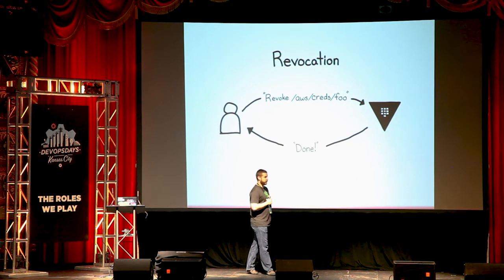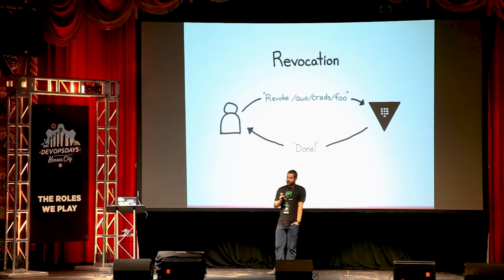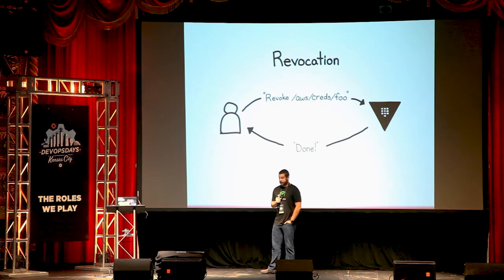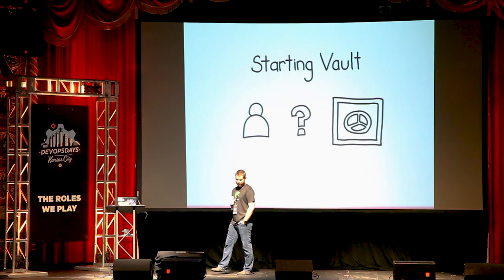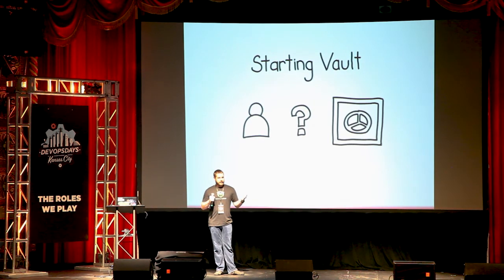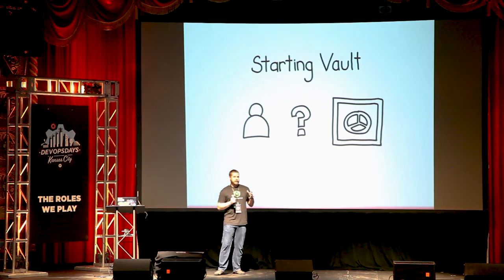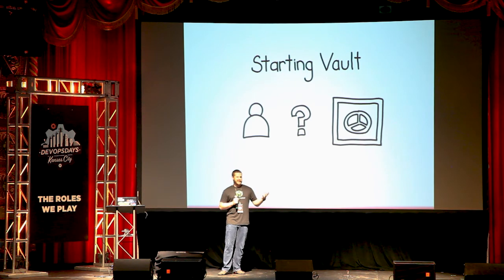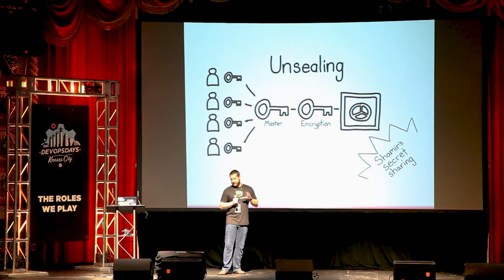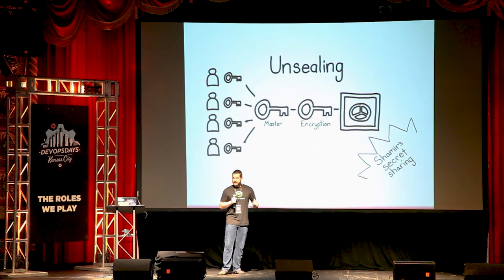Lastly, Vault is going to provide you with the ability to revoke your secrets. So if something really bad happens, you're going to have the ability to revoke an entire class of secrets — you can revoke all the S3 secrets or something like that. Now, how do you get started with Vault? The first thing you'll run into is that it has a different method of unsealing than most other things. Most things give you one password to unlock it, but Vault has this secret sharing mechanism where you have multiple keys that you use to unseal it and then get the application started up.